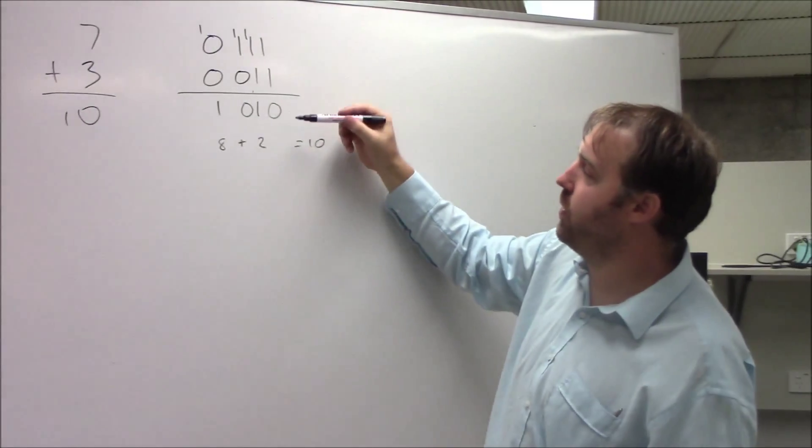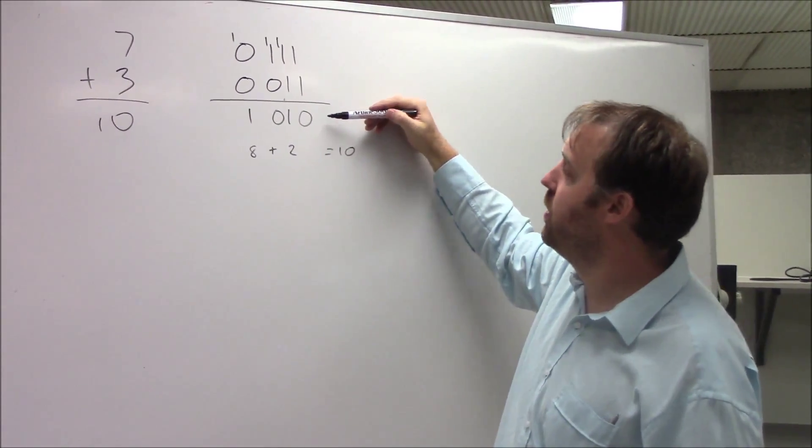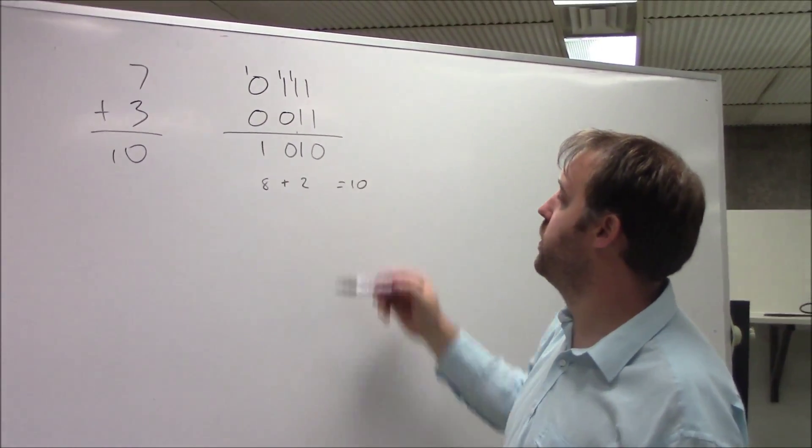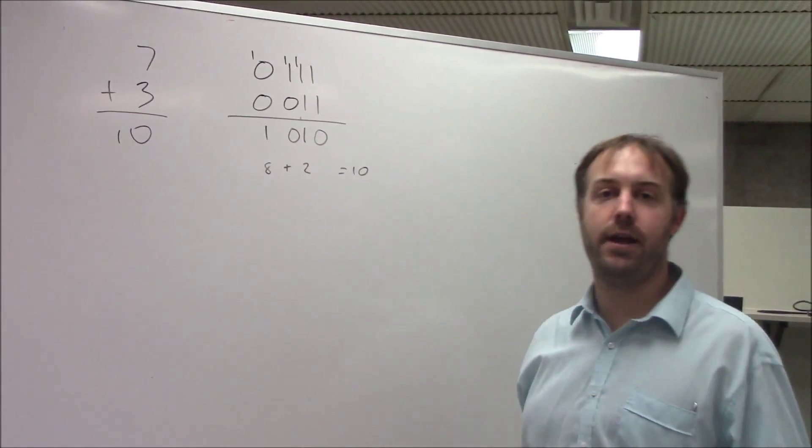So if I convert that into decimal, we've got 1 out of 8, 1 out of 2, which is 10. So you can see that it adds together quite nicely.